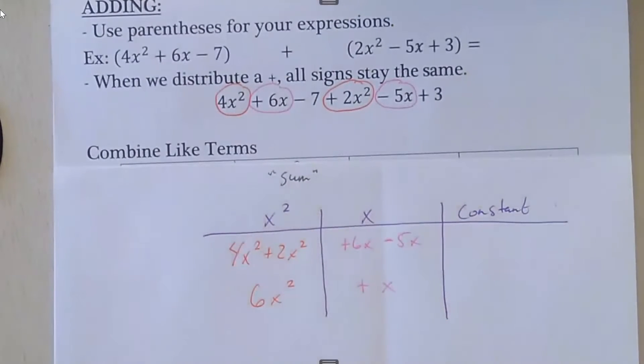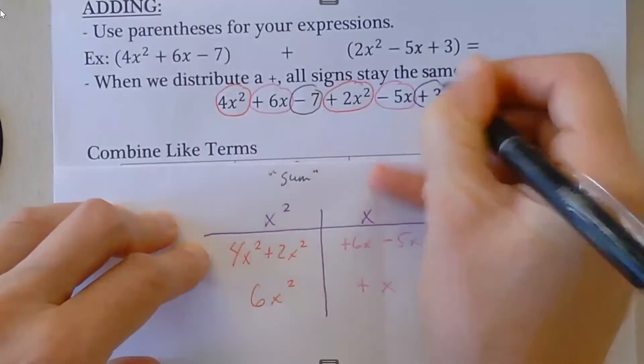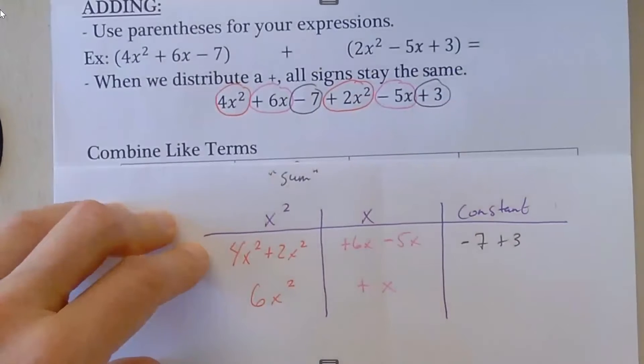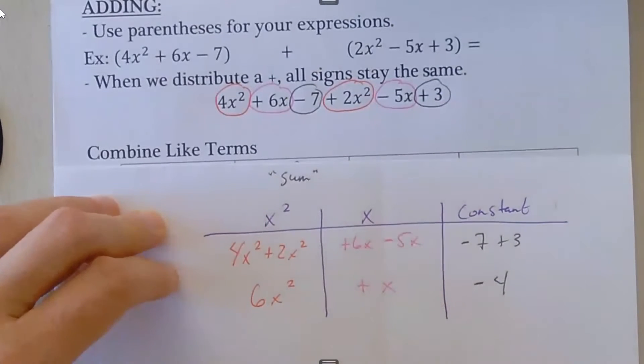And then finally our constant terms: negative 7 plus 3. Negative 7 plus 3 is negative 4. So our answer here is 6x² + x - 4.